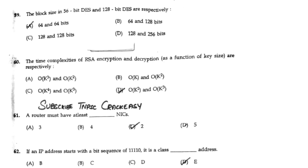The block size in 56-bit DES and 128-bit DES are respectively 64 and 64 bits.